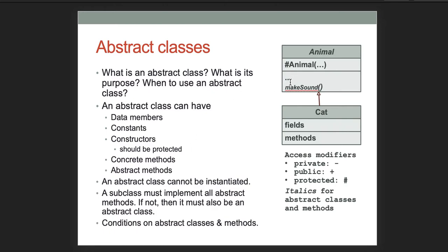Know about abstract classes: what they are, what they're used for, and when to use them. An abstract class can have everything a concrete class can, except it cannot be instantiated, and it can also have abstract methods — methods that must be implemented by any class that inherits from it. We typically should make constructors protected because they can't be used by outside classes anyway; they can only be called by child classes. Remember: the subclass must implement all abstract methods, or it must also be declared abstract.